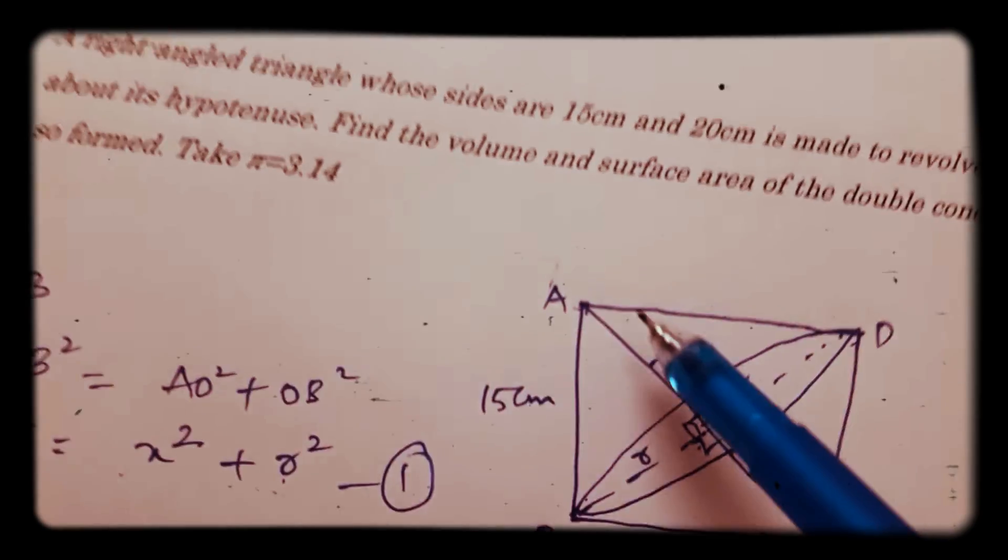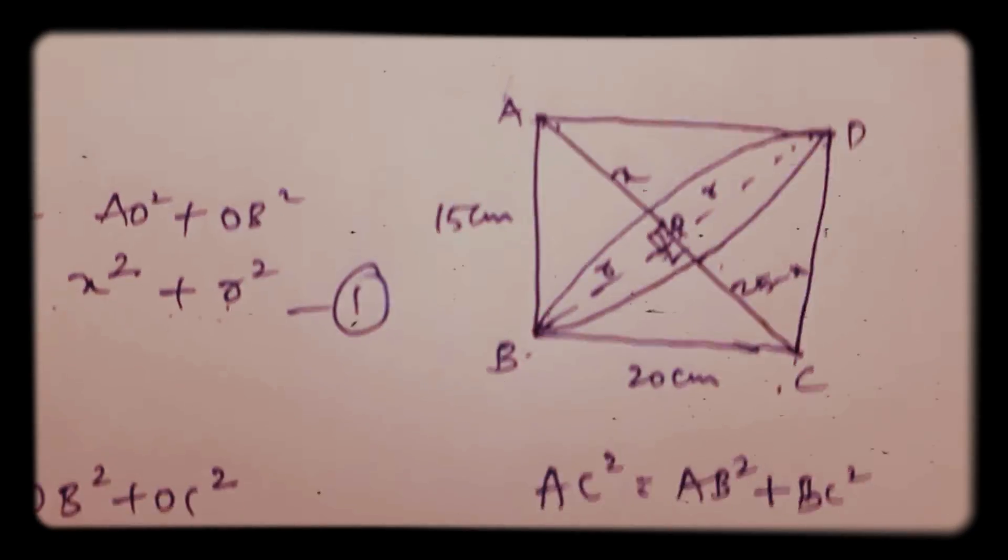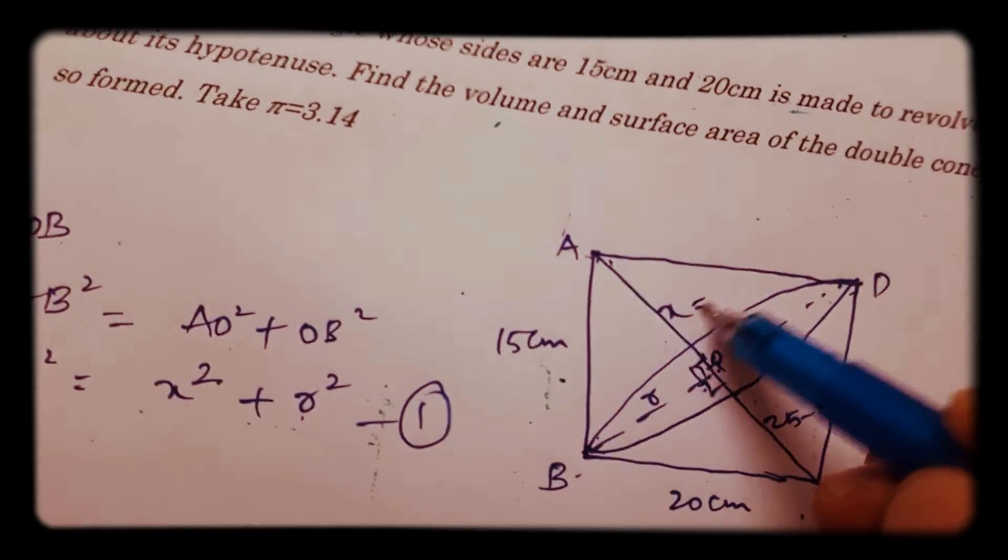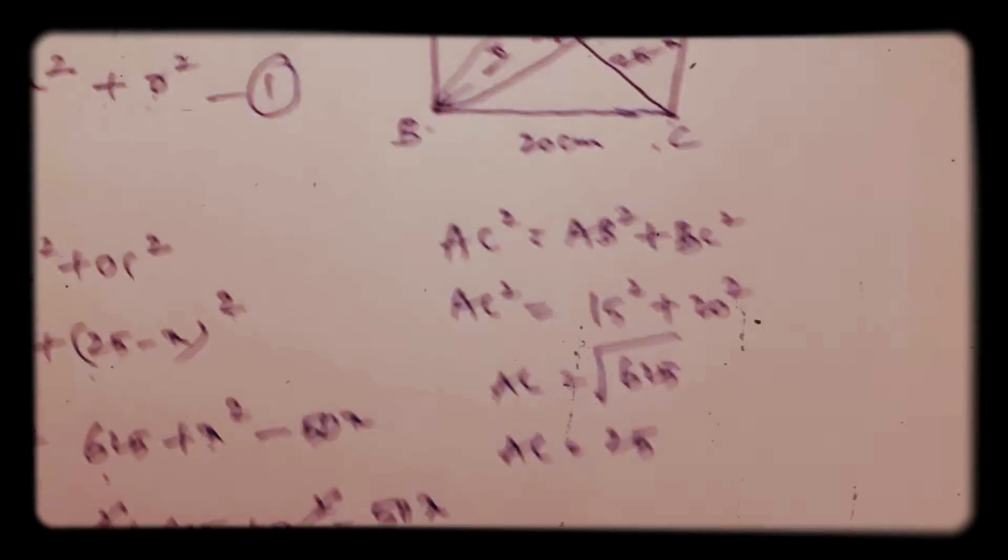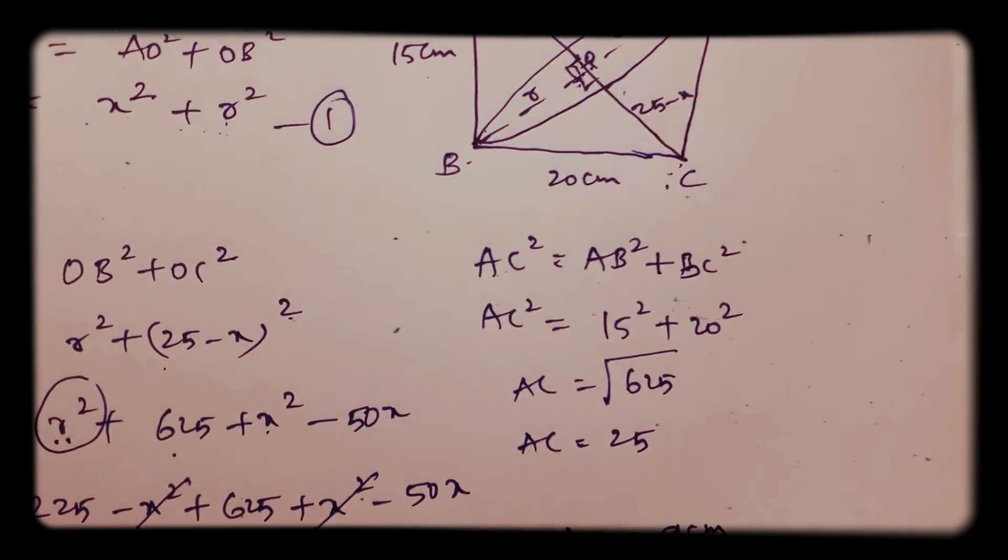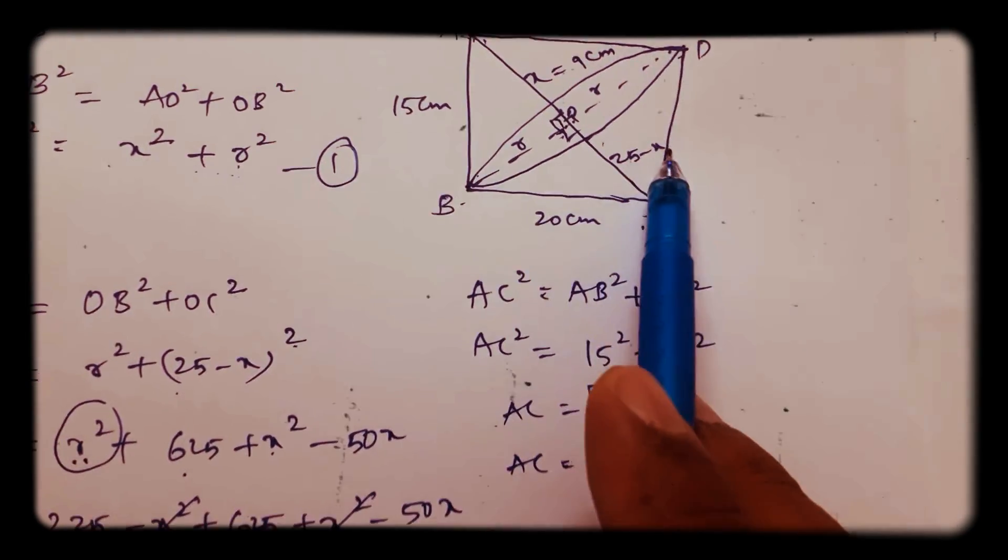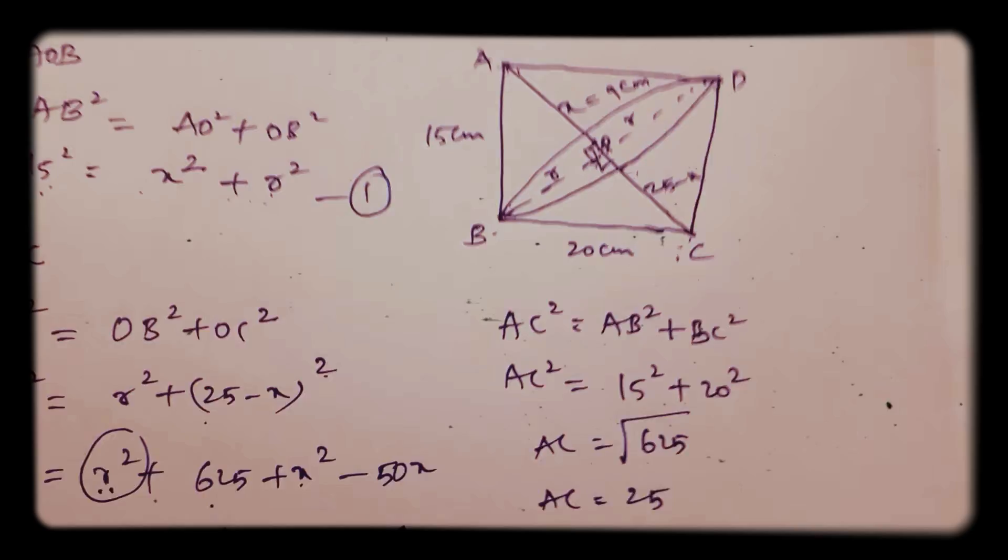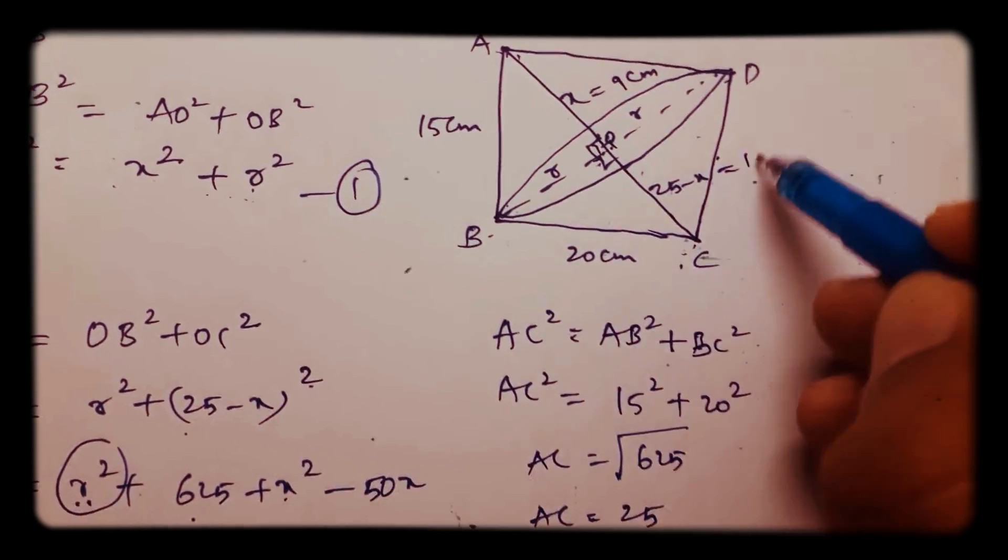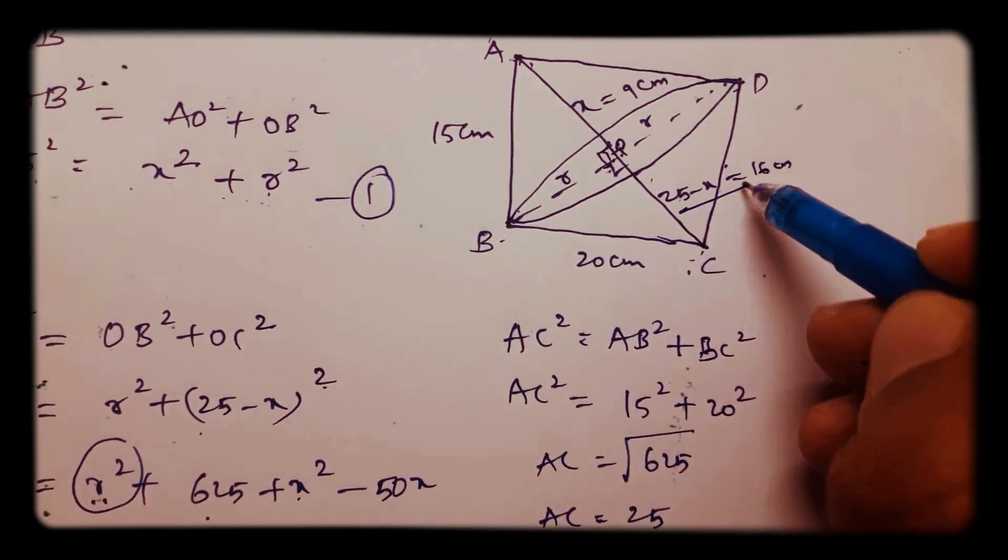So you got the value of AO. AO here is 9 centimeters and CO is 25 minus 9, that is 16 centimeters.